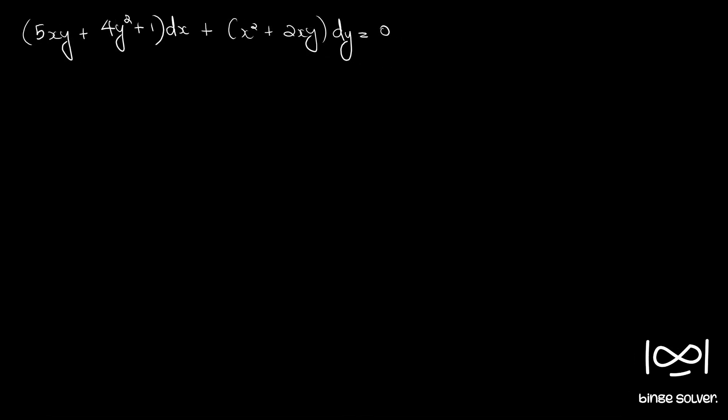So we have our integrating factor is equal to x cube. So multiplying throughout by x cube we get 5x raised to 4y plus 4x cube y squared plus x cube dx plus x raised to 5 plus 2x raised to 4y dy equal to 0.